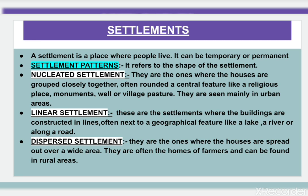First is nucleated settlements. These are settlements where the houses are grouped closely together, often around a central feature like a religious place, monuments, a well, or village pasture. They are mainly seen in urban areas.